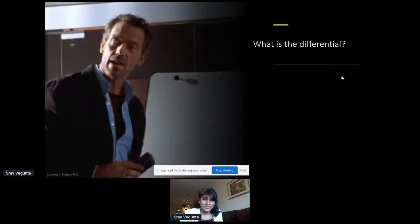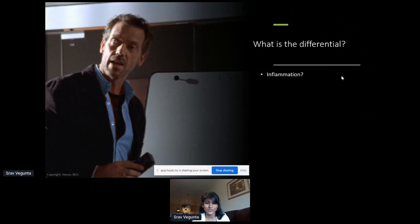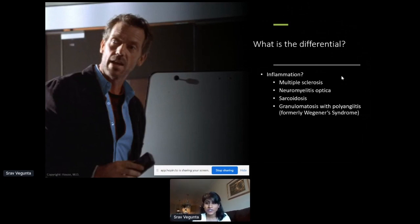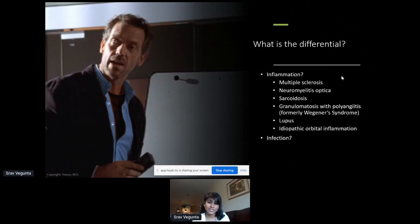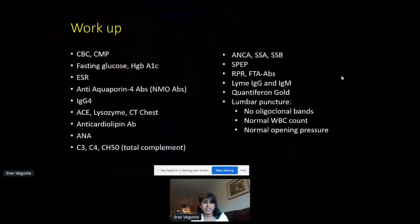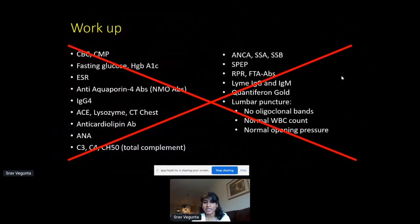At this point — like a doctor show — we had to think about what was causing her vision loss and pain, and why it was recurring. Was this multiple sclerosis, neuromyelitis optica, sarcoidosis, granulomatosis with polyangiitis, lupus, or some other cause of inflammation? Was it an infection like TB, syphilis, or Lyme disease — or even cancer? We did a full workup including blood tests and spinal fluid, and didn't find anything positive from that list.